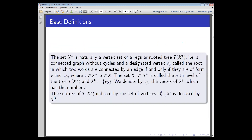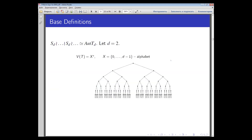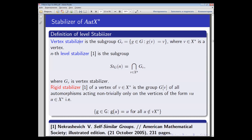To formulate our results we need to recall that the iterated wreath product is isomorphic to the group of automorphisms of a full regular rooted tree. This is noted in the form of a formula: the group of automorphisms is isomorphic to the wreath product. In this case D equals the vertex stabilizer, which is the subgroup that stabilizes a vertex of such a tree.